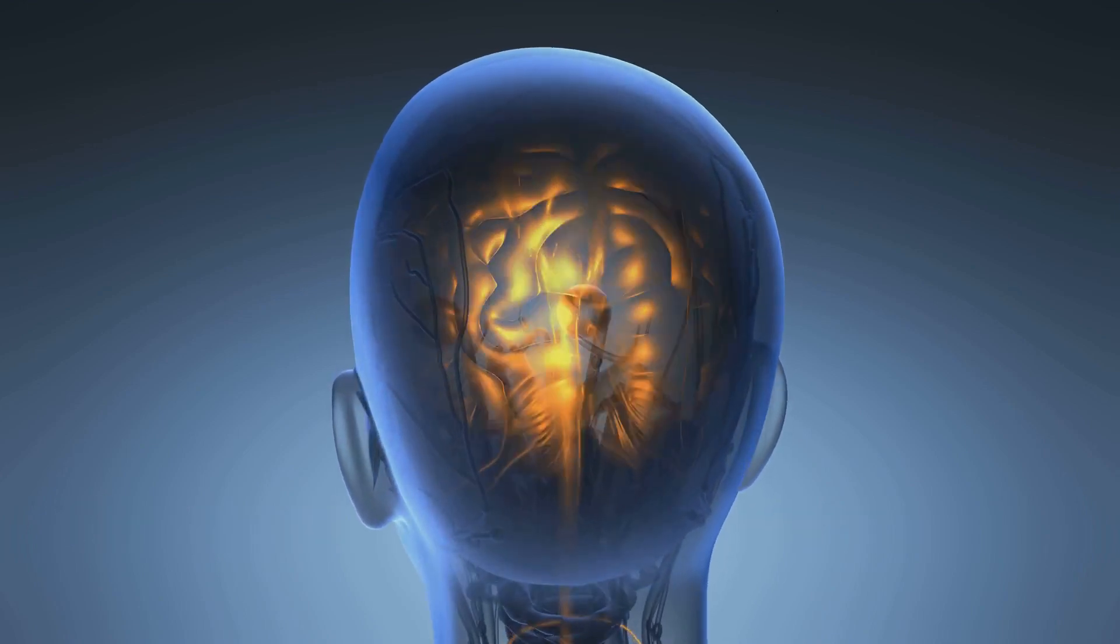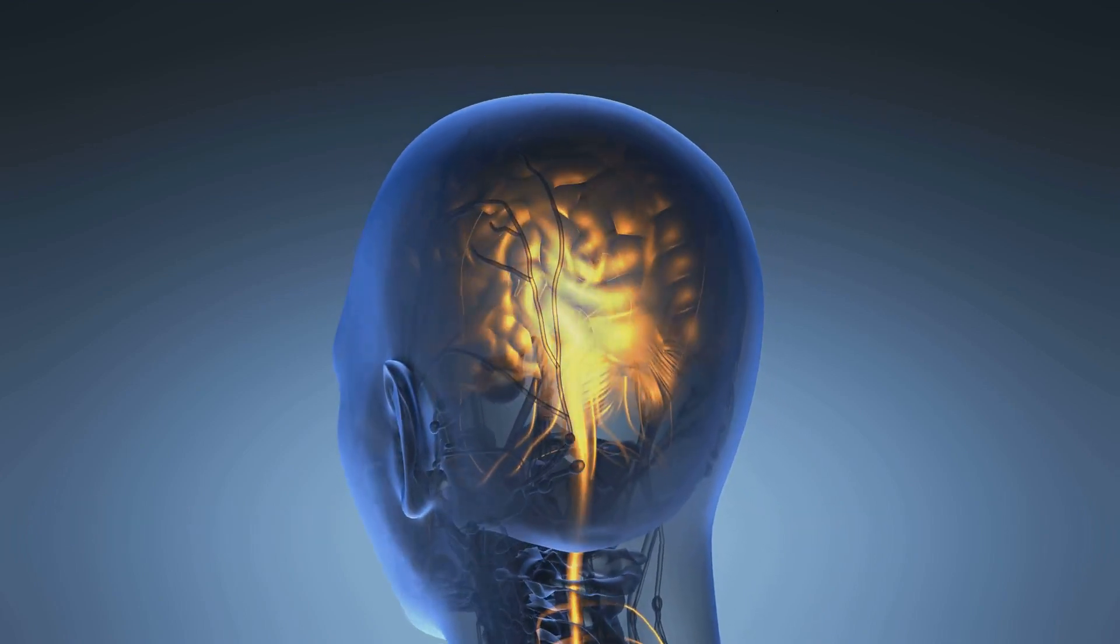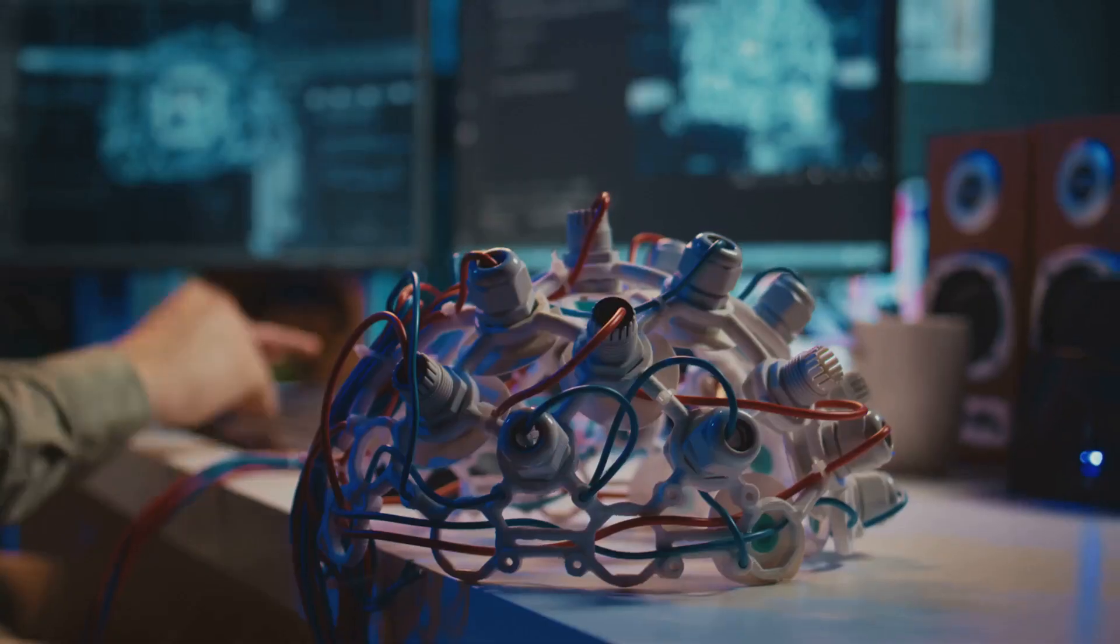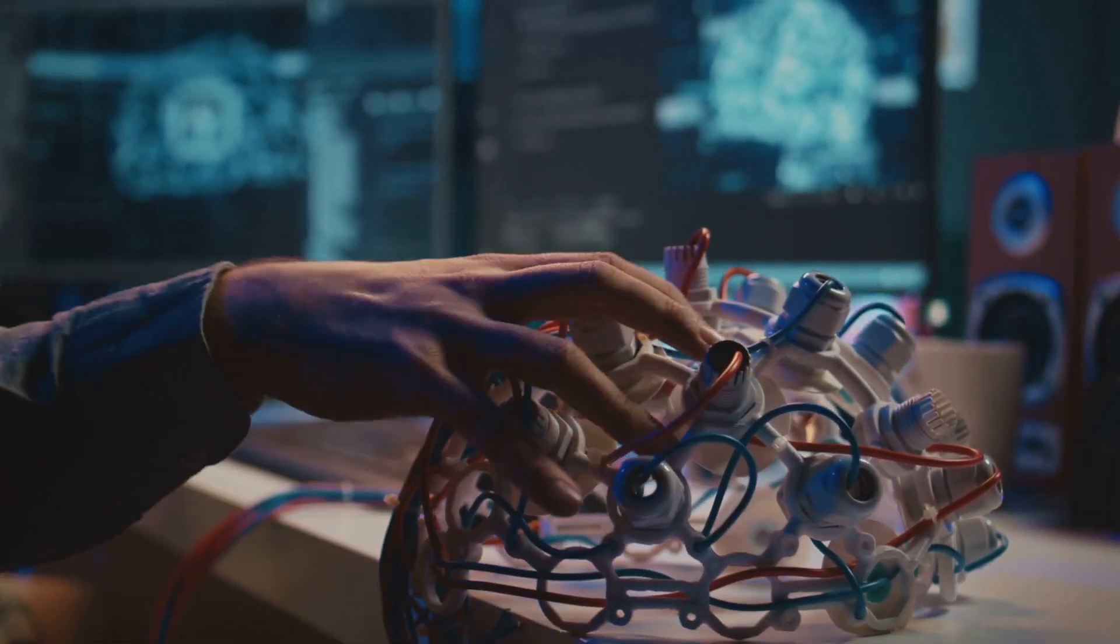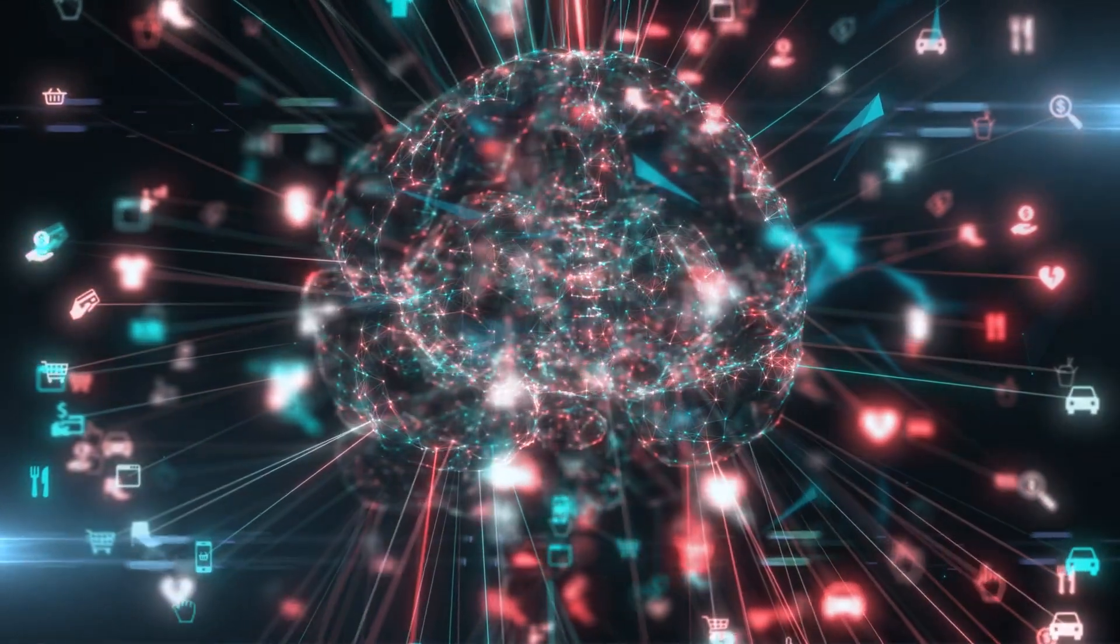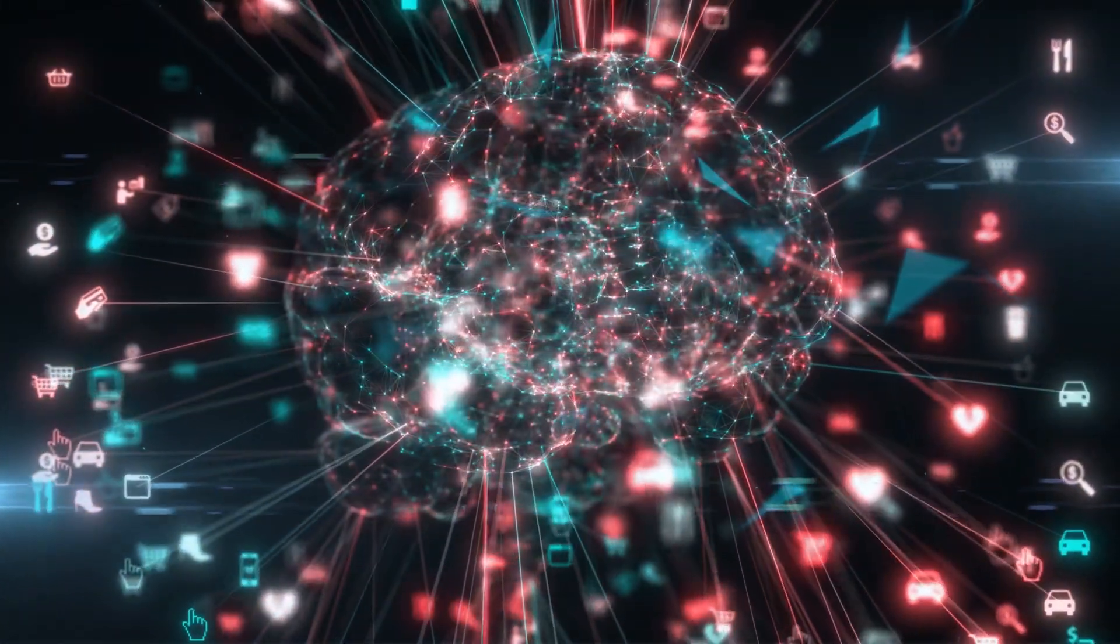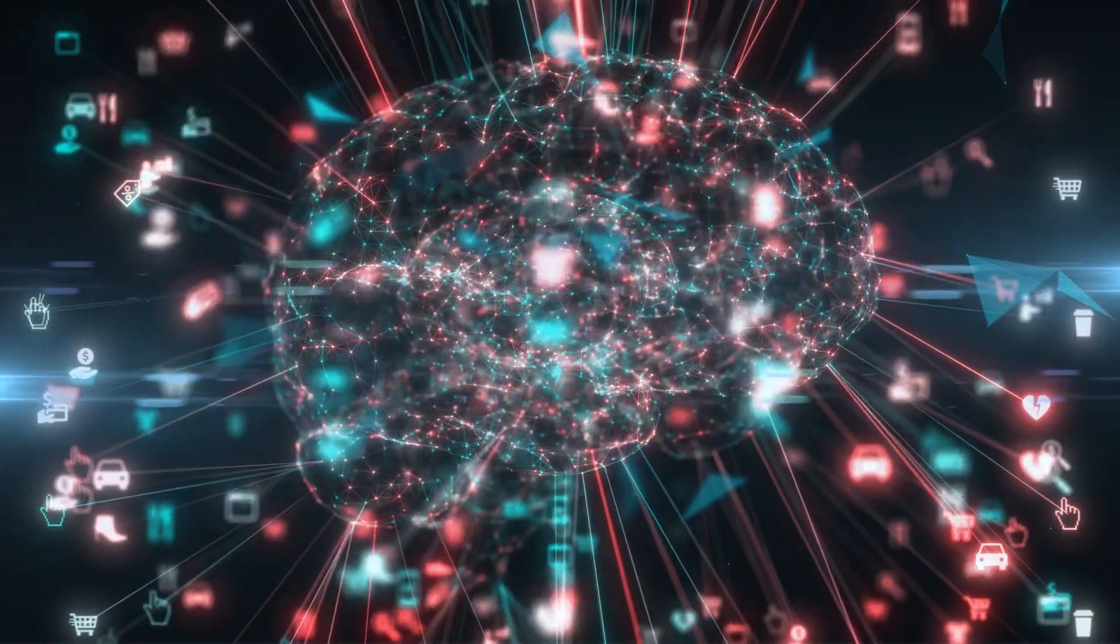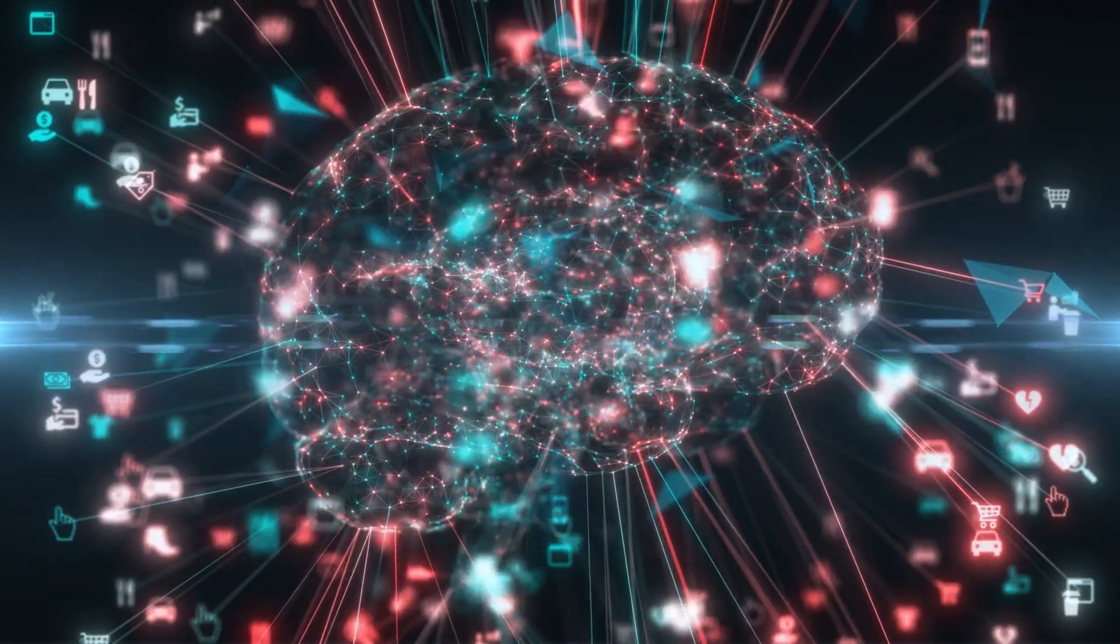At the heart of the Emperor's New Mind is one central question: What is consciousness? What makes us self-aware, capable of thought, reasoning and creativity? Despite advances in neuroscience, consciousness remains a mystery. Most modern theories assume that the brain, much like a computer, processes information through algorithms and that our conscious experience arises from this processing. But Penrose disagrees.